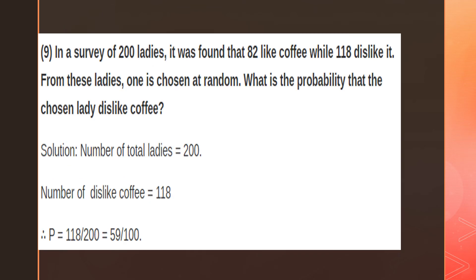In a survey of 200 ladies, it was found that 82 like coffee while 108 dislike it. From these ladies, one is chosen at random. What is the probability that the chosen lady dislikes coffee? Total number of ladies is 200. The number who dislike coffee is 118. The probability equals 118 divided by 200, which simplifies to 59 by 100.